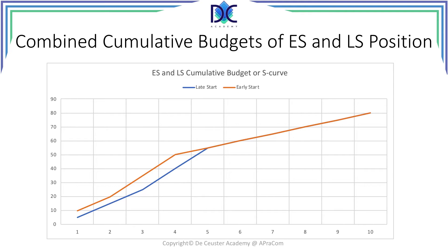The orange curve is the early start and the blue curve is the late start. The starting point is not the same because activities A and B could start at the beginning of the project, but B is not critical so we moved B away — the cost of B will come later. When we move activities to the late start position, the cash flow for the project is also different; we will need the money later, which may have a positive effect on your business case.